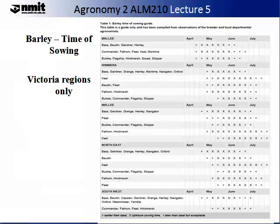This guide produced by DPI Victoria illustrates for Victorian regions the time of sowing for barley. This will give you an indication of when to sow and how long the season is. As you can see, this does change slightly depending on your location. It will also depend on the climatic inputs for that season and your variety interactions.